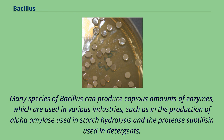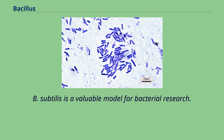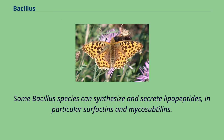Many species of Bacillus can produce copious amounts of enzymes used in various industries, such as in the production of alpha-amylase used in starch hydrolysis and the protease subtilisin used in detergents. B. subtilis is a valuable model for bacterial research. Some Bacillus species can synthesize and secrete lipopeptides, in particular surfactants and mycosutilins.